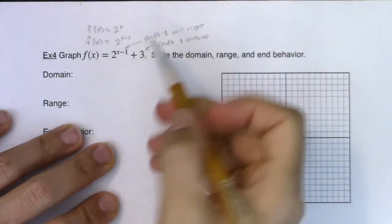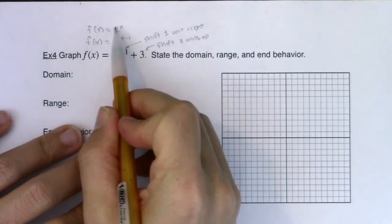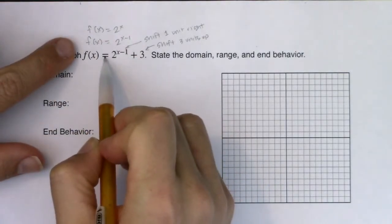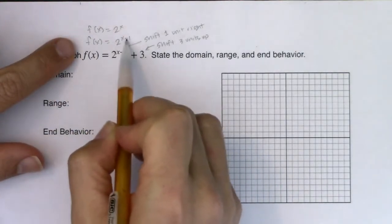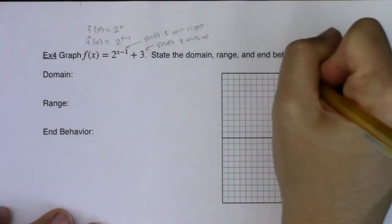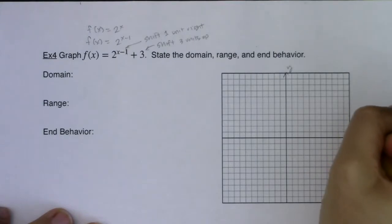1 unit right. And again that's 1 unit right and 3 units up from this original function of 2 to the x. If we're talking about example 3 to 4, we're just taking what we had in example 3 and shifting it up 3 units. So let's go ahead, start to graph this.